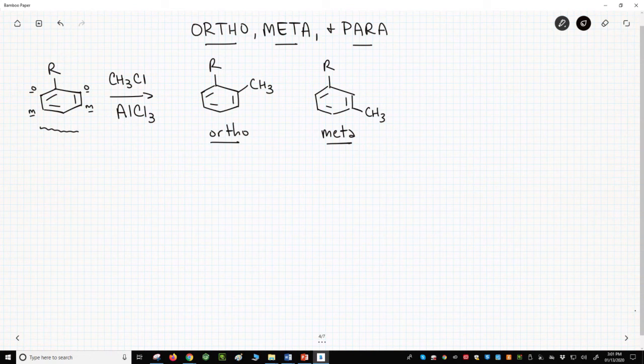The methyl group could also go opposite the R group. This is the para product. There is just one para carbon relative to the R group. So which product is formed?